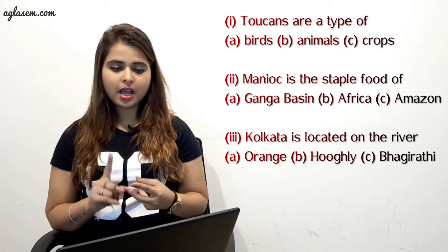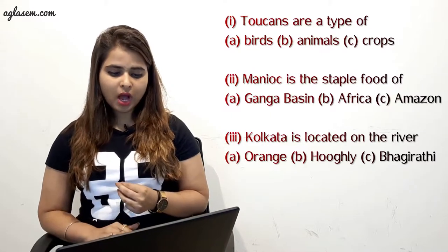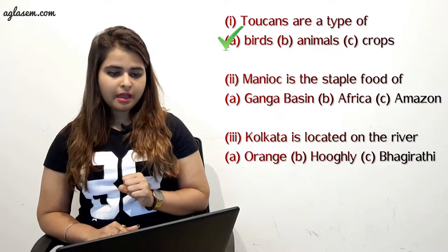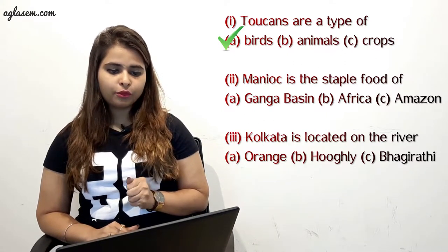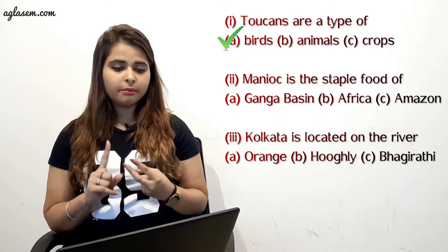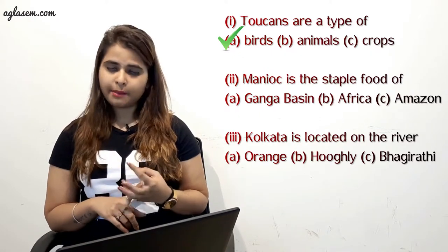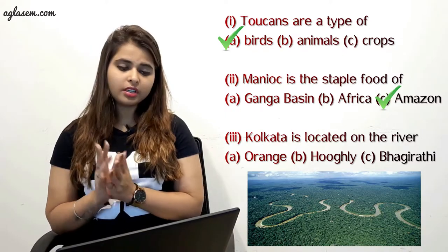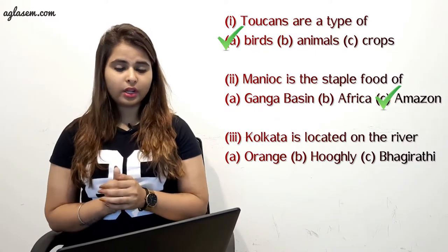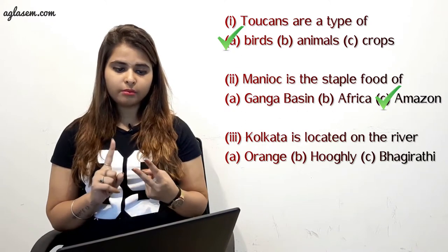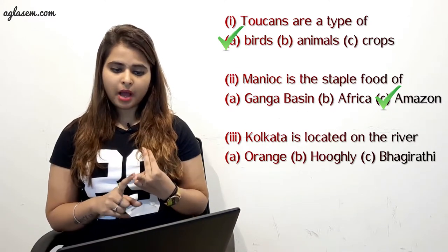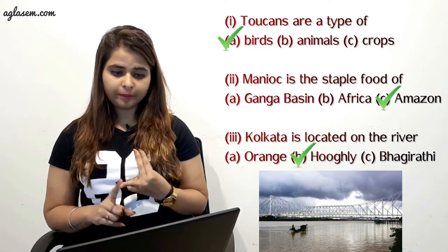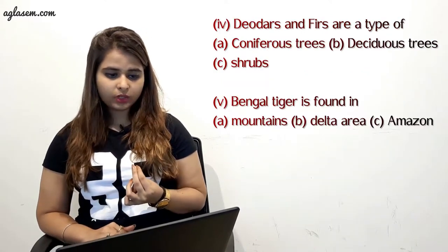Question 2: tick the correct answer. First part: stork is a type of bird, animal, or crop? The answer is bird. Second part: manioc is a staple food for the Ganga basin, Africa, or Amazon? The answer is Amazon. Third part: Kolkata is located on the river — A) Orange, B) Hooghly, C) Bhagirathi? The answer is B) Hooghly.